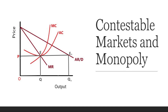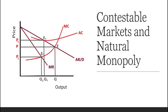Similarly, costless entry or exit in an oligopolistic market makes that market contestable. However, there is the possibility of natural monopoly in a contestable market which is not perfectly competitive. The existence of natural monopoly is due to economies of scale and the size of the market. The monopoly firm may be very large and operating on a minimum efficient scale, so that it is itself an entire industry, producing for the entire market.